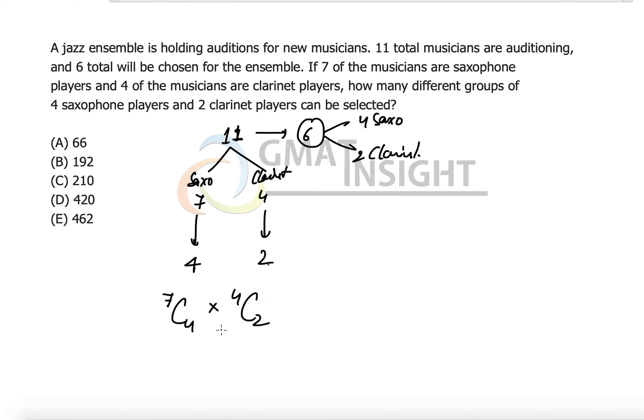Now we can simplify these. 7C4 has a value of 7 factorial over 4 factorial times (7 minus 4), that is 3 factorial. And 4C2 is 4 factorial over 2 factorial times 2 factorial, because the formula of nCr is n factorial over r factorial times (n minus r) factorial.